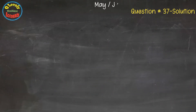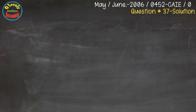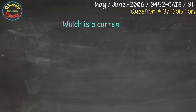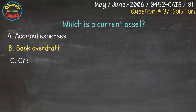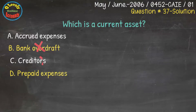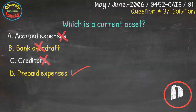We have question number 37 from May/June 2006, 0452 IGCSE Paper 1. In this question, which is the current asset? Options are: A. Accrued expense, B. Bank overdraft, C. Creditor, and D. Prepaid expense. A prepaid expense is a current asset. This is the correct answer, available with the D option in the question.